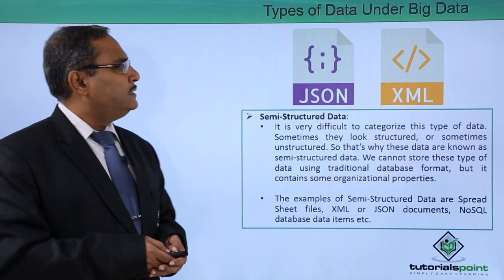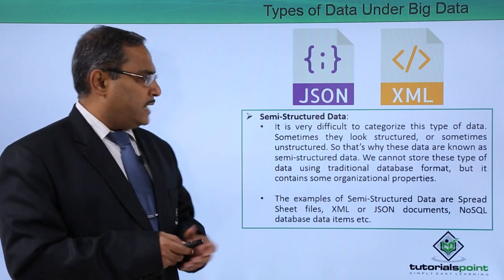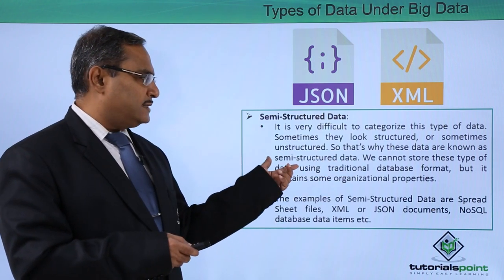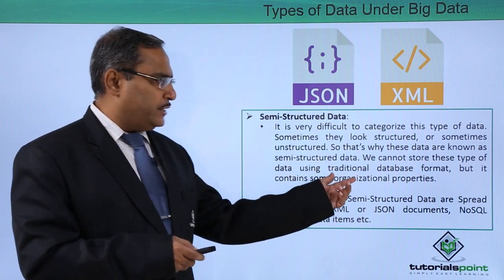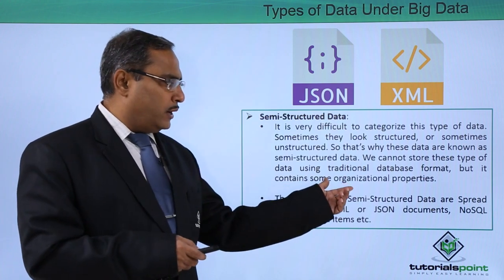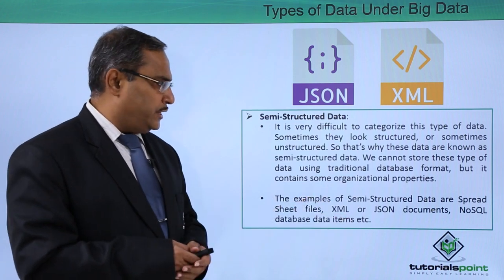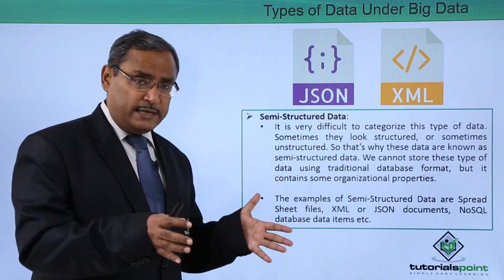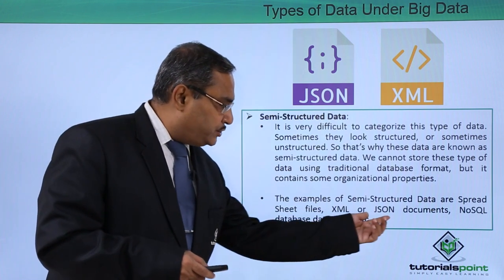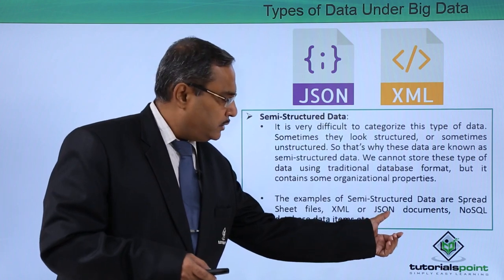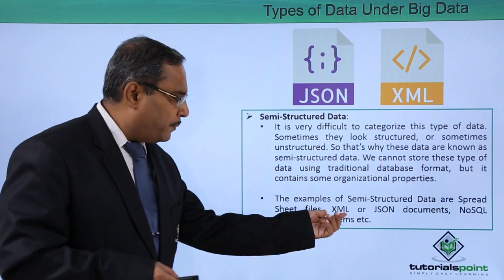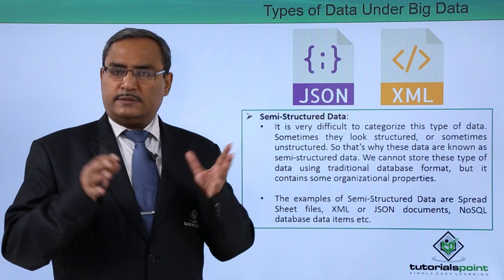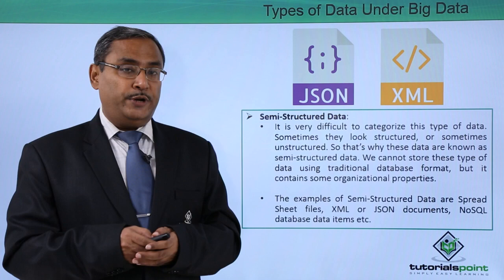Now let us come to the last category: semi-structured data. It is very difficult to categorize this type of data — sometimes it looks structured and sometimes it looks unstructured, which is why it is known as semi-structured data. We cannot store this type of data using a traditional database format, but it contains some organizational properties. Examples of semi-structured data are spreadsheet files in Excel or Calc, XML documents — that is, Extensible Markup Language — JSON documents (JavaScript Object Notation), and NoSQL databases. NoSQL is one kind of database where we can keep this type of data in a very efficient way.